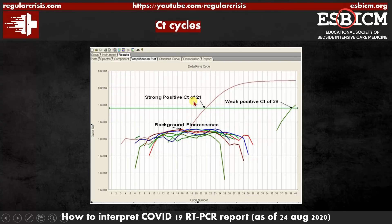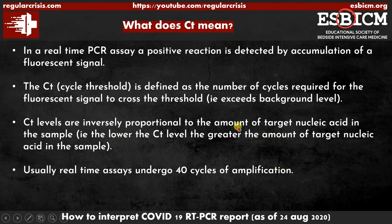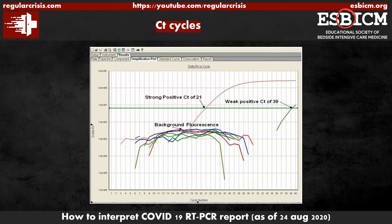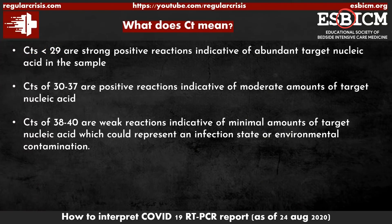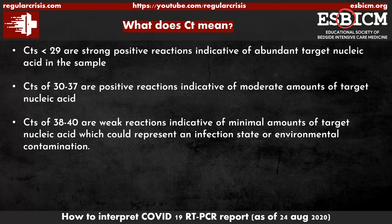If it crosses the threshold at 21 cycles, it is strongly positive. If it requires 39 cycles to cross the threshold, it is weakly positive. This means CT levels are inversely proportional to the amount of target nucleic acid present in the sample. If more viral particles are present, fewer cycles are required to amplify. If fewer viral particles are present, more cycles are required to cross the threshold. So if CT cycles are less than 29, it is considered strong positive; 38 to 40 cycles is weakly positive; and 30 to 37 is moderate. The lower the CT cycle count, the higher the viral load.